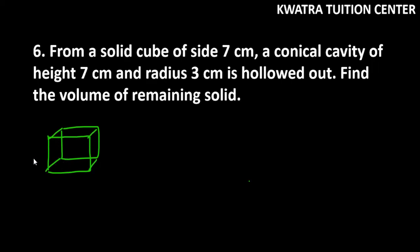This is a cube of measurement 7 cm side, and we are removing a conical cavity, a cone out of this. The cone height is 7 cm and the radius given is 3 cm.